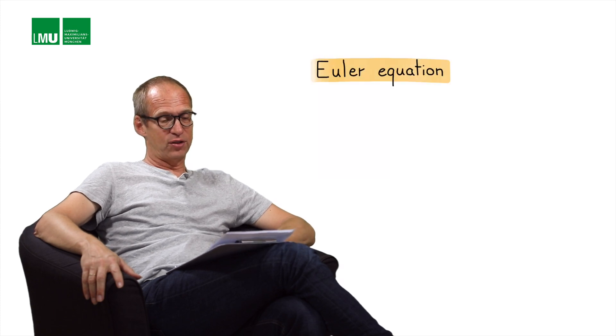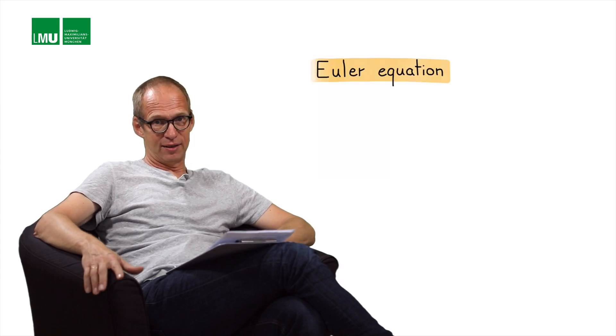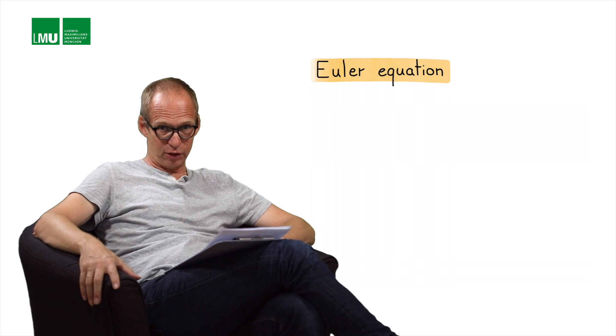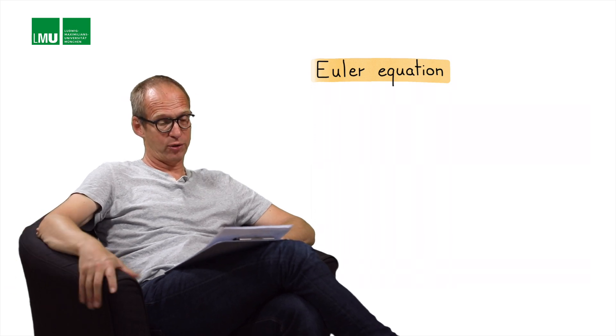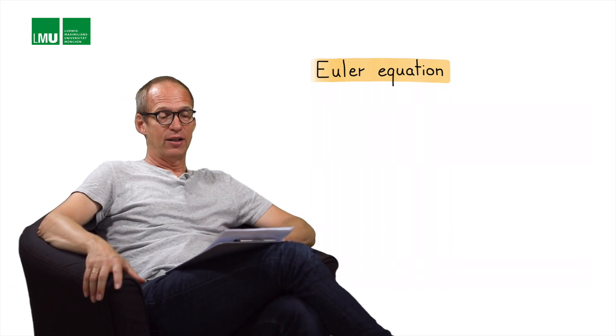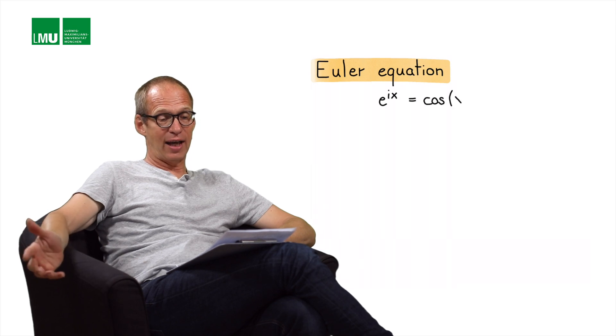For the von Neumann analysis, we make use of plane waves using complex notation, so I hope you have some familiarity with complex numbers. Let's start simple and look at the Euler equation, which relates the exponential function to the trigonometric functions cosine and sine. So e to the ix equals cosine x plus i sine x.